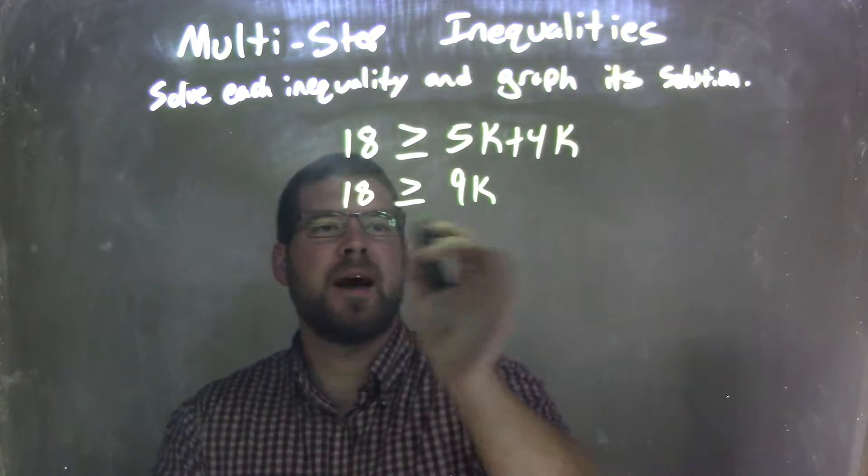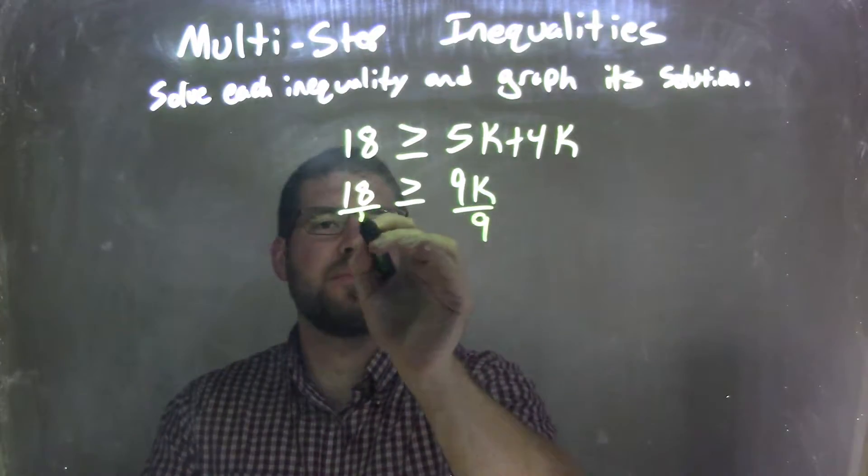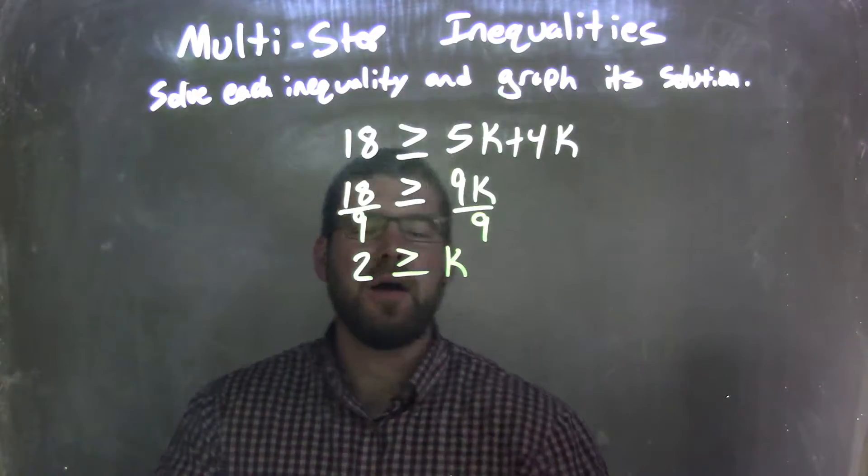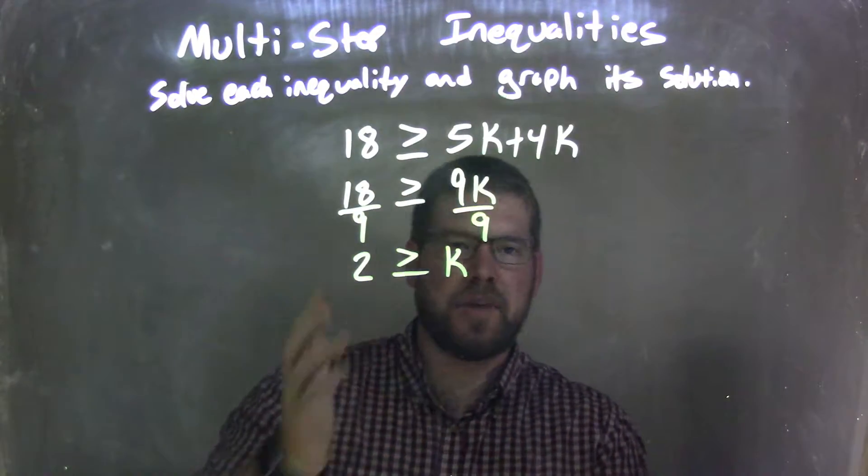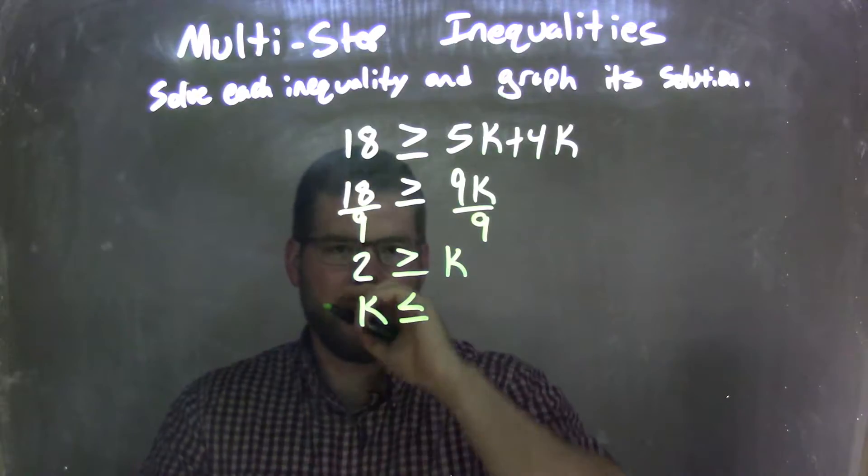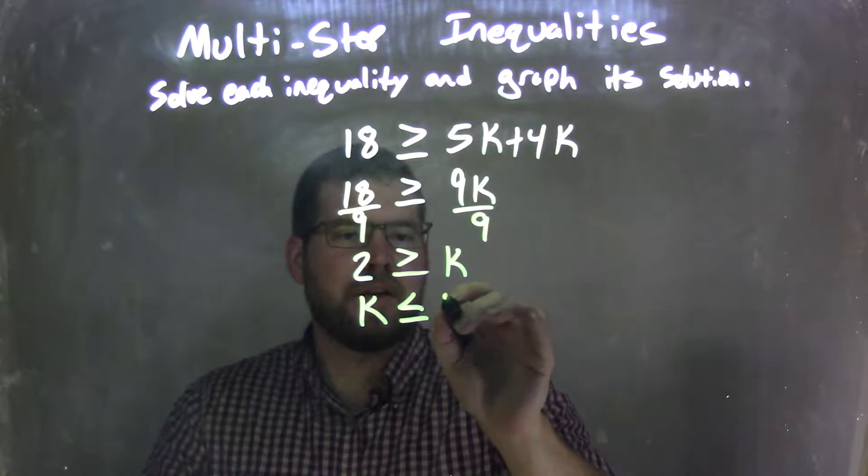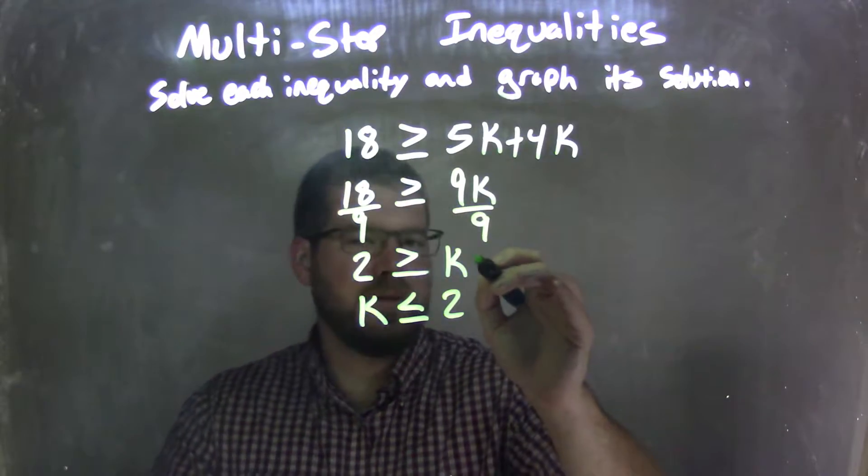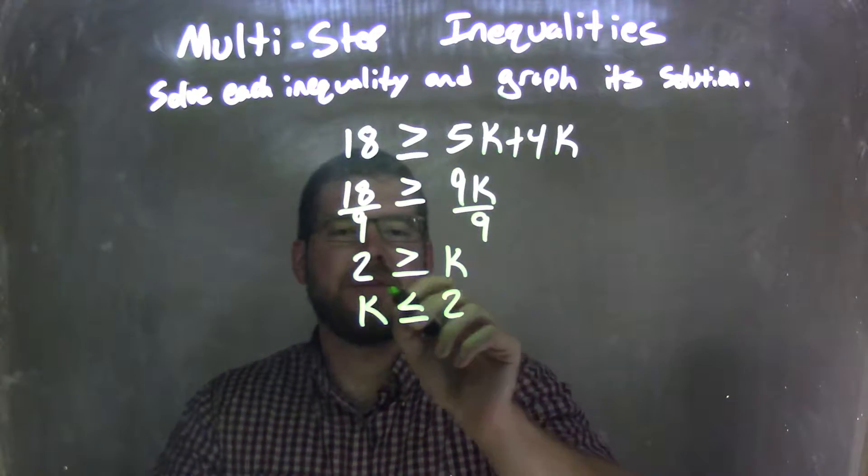Now I want to divide by 9 on both sides to get k by itself. 18 divided by 9 is 2. 2 is greater than or equal to k. Now, I'm going to rewrite this so I have k come first. And in doing so, I need to flip my inequality from a greater than or equal to sign to a less than or equal to sign, and then a 2 on the right. So 2 being greater than or equal to k is the same thing as k is less than or equal to 2.